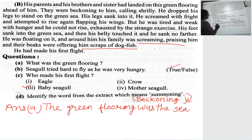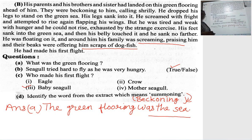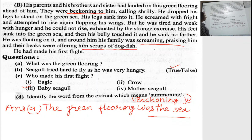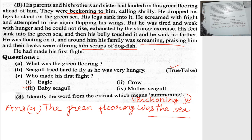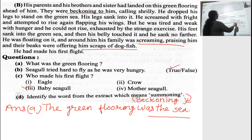What was the green flooring? The green flooring was the sea. He tried hard to fly as he was very hungry — true or false? That is true. Who made his first flight? One: eagle, two: crow, three: baby seagull, four: mother seagull. The right answer is the third — the baby seagull. Identify the word from the extract which means 'summoning'. The answer is 'beckoning'. So this is your first story, 'His First Flight', question-answer done.